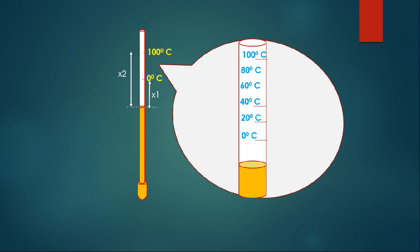Now I am going to dip the thermometer in some unknown liquid whose temperature is unknown. If the fluid level comes to the 40 mark, then its temperature is 40 degrees Celsius, because I have fixed the ice point as 0 degrees Celsius and the boiling point as 100 degrees Celsius.